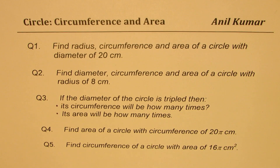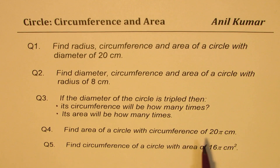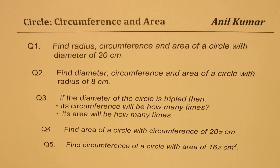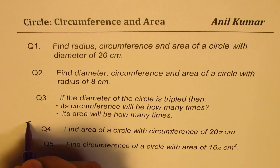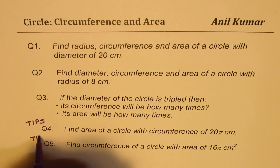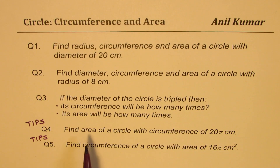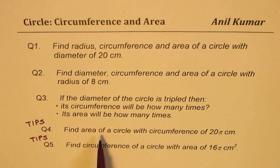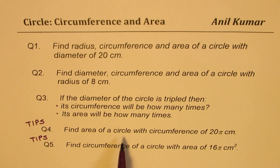Question number four: find area of a circle with circumference of 20π centimeters. Now, question number four and five are thinking questions. We are now given the circumference of a circle and need to find area. First step will be to find the radius and then the area — some backward calculation will be involved.